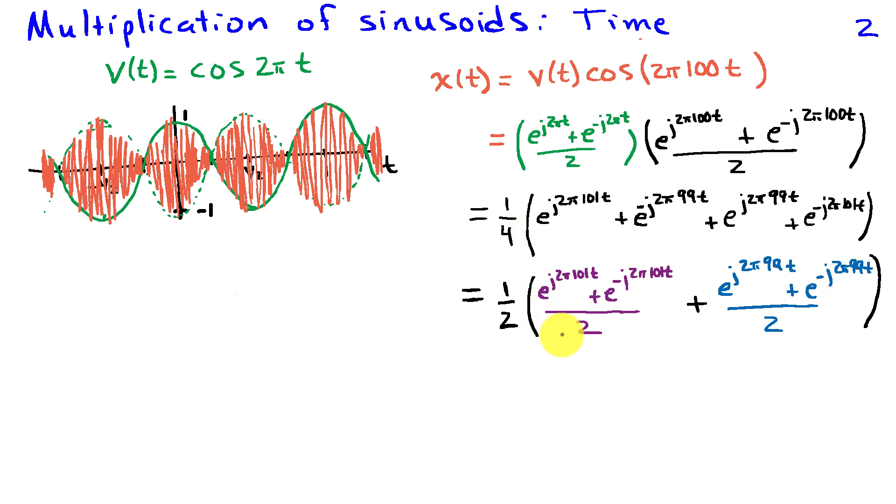We'll take the 1 fourth, distribute the 2s. So I can rewrite this as 1 half cosine of 2 pi 101 t plus 1 half cosine 2 pi 99 t. So when I multiply two sinusoids, I add a 1 hertz and a 100 hertz sinusoid. I end up with a sinusoid at 101 hertz, the sum of the two frequencies, plus another sinusoid at 99 hertz, which is the difference of the two frequencies.